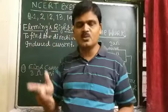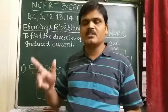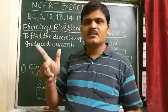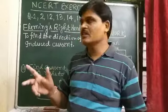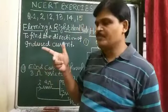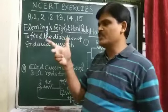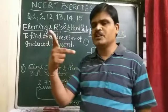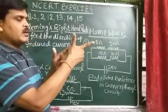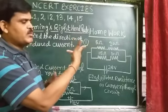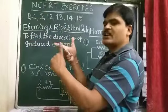Fleming's right hand rule can be used to find the direction of induced current. Listen carefully: if we stretch the first three fingers of our right hand so that they are mutually perpendicular to each other, then the four finger points in the direction of the magnetic field.